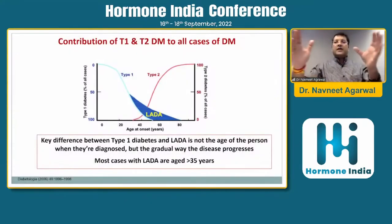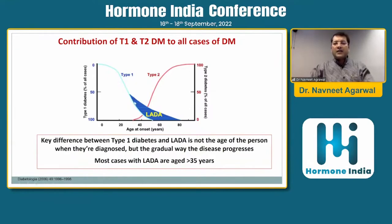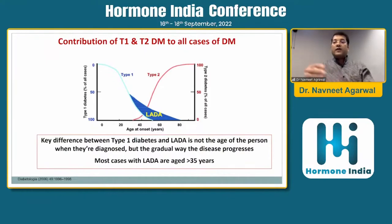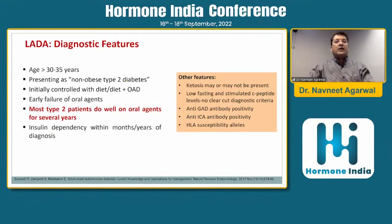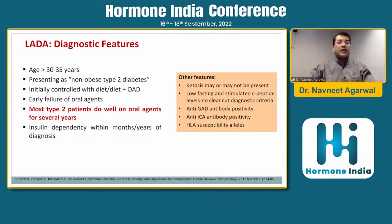Regarding the contribution of types: 95% of patients are type 2 diabetes, 5 to 6% are type 1, with some overlap between type 1 and type 2. The key difference between type 1 and LADA is not age — we can see LADA even at age 45 or 50. Most cases of LADA are aged more than 35 years. Diagnostic features for LADA include: aged over 35, presenting as non-obese type 2 diabetes, initially controlled with diet plus oral anti-diabetics, with early failure of the oral agent — within 1 to 2 years, patients may require insulin therapy.